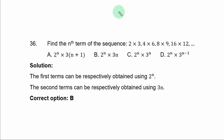Question 36. Find the nth term of the sequence 2×3, 4×6, 8×9, 16×12. Each term has 2 terms.